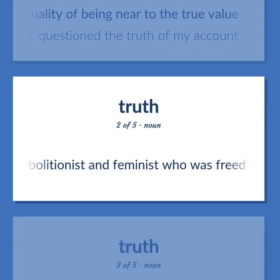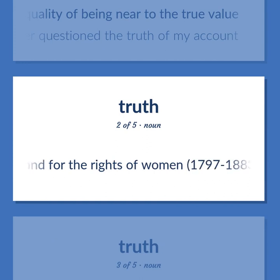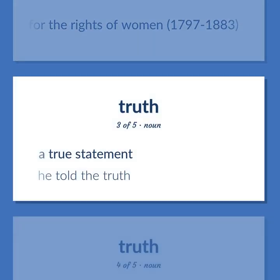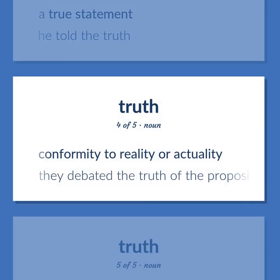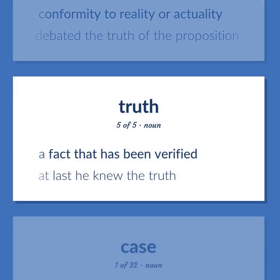Sojourner Truth: United States abolitionist and feminist who was freed from slavery and became a leading advocate of the abolition of slavery and for the rights of women, 1797 to 1883. Truth: A true statement — he told the truth. Conformity to reality or actuality — they debated the truth of the proposition. A fact that has been verified — at last he knew the truth.